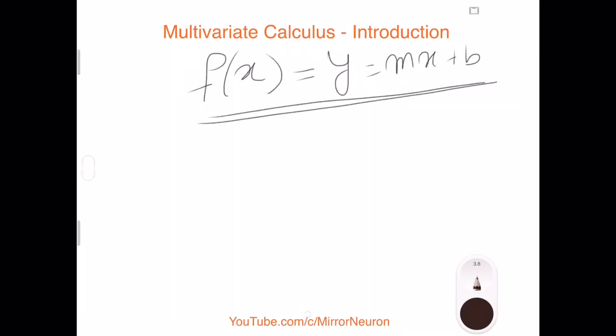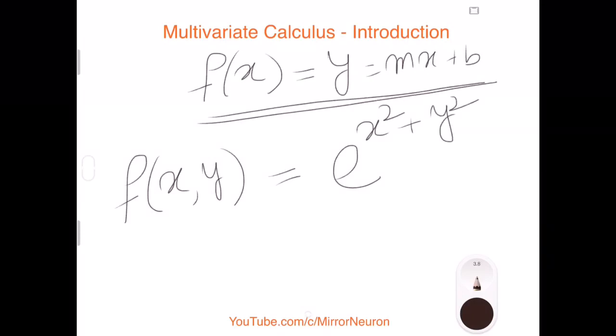In case of multivariate, we say we have another variable y, f of x, y, and say it would look something like this, say x square plus y square.